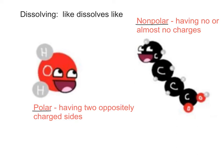Atoms have charges in them, so depending how they connect with each other, they may be left with no real charge because they've balanced out their charges with each other when they connect, or they could be left with some overall charge because they haven't balanced it out.